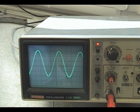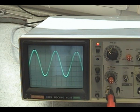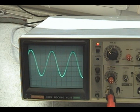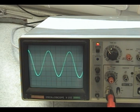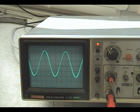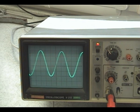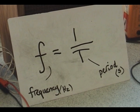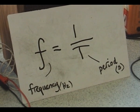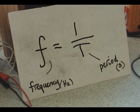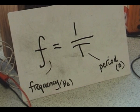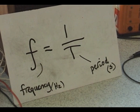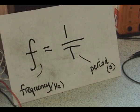If the period of the wave is four milliseconds, we already know the equation to work out frequency from the period: frequency equals one over the period. If the period of our wave was four milliseconds, that's 0.004, then one divided by 0.004 is 250 hertz.